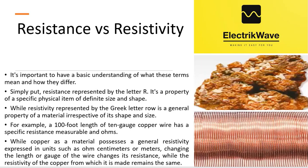For example, a 100-foot length of 10-gauge copper wire has a specific resistance measurable in ohms. While copper as a material possesses a general resistivity expressed in units such as ohm centimeters or meters. Changing the length or gauge of the wire changes its resistance, while the resistivity of the copper from which it is made remains the same.